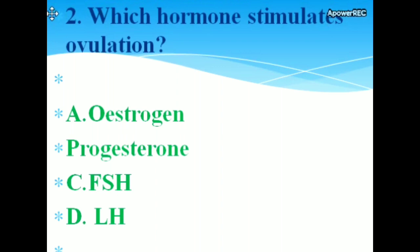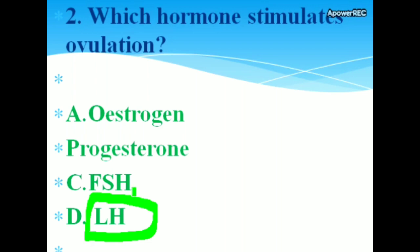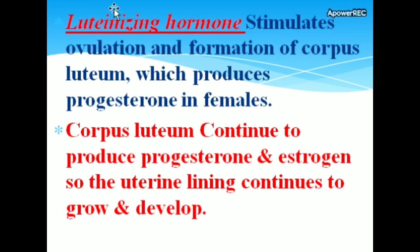Next question: Which hormone stimulates ovulation? The correct answer is luteinizing hormone. Luteinizing hormone stimulates ovulation and the formation of the corpus luteum, which produces progesterone in females.